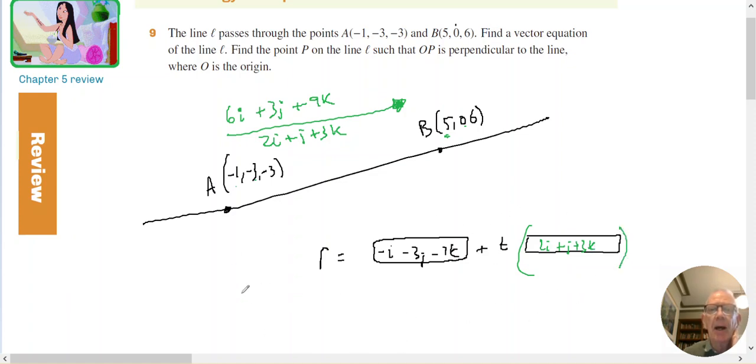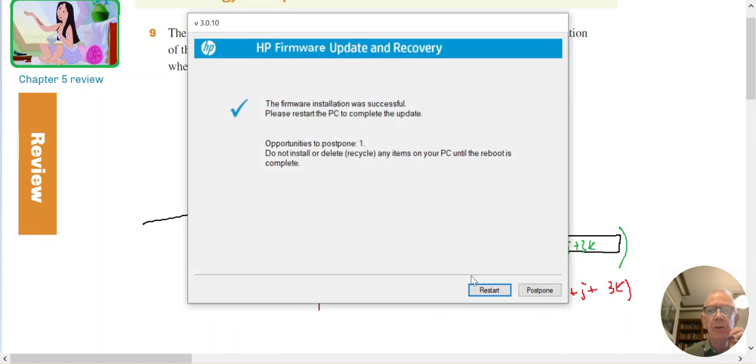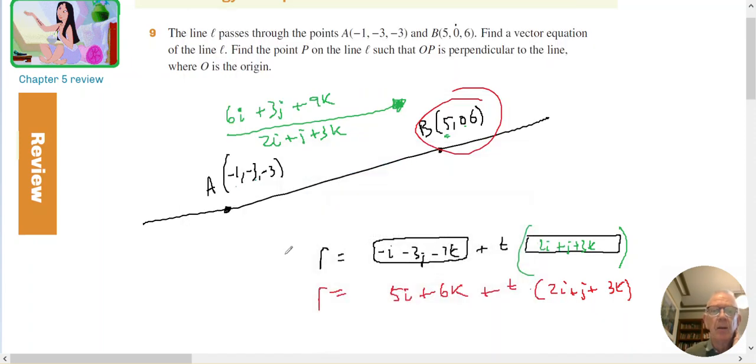That's an equation of the line that goes through those two points. I could also have written and used this point and said 5I plus 6K plus T times 2I plus J plus 3K, and be correct. Both of them describe this line because this is a marker on the line and this is the direction of the line.